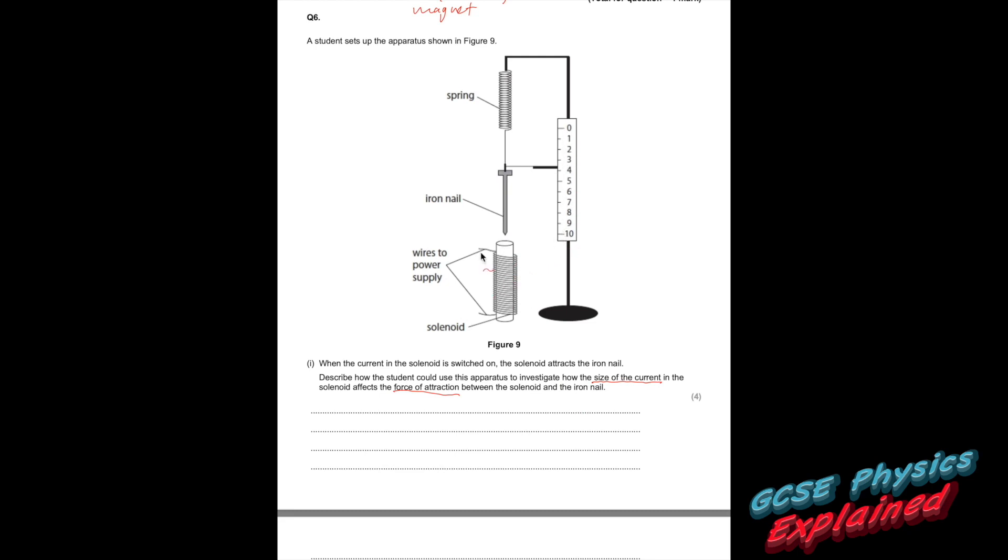So, if we have some way to measure how much current's going in, and we'll make it a small current at first, and that'll just pull the iron nail down a little bit, because a small current will create a small magnetic field. So, that'll be a small force of attraction, and that'll pull the spring down and the pointer down a little bit. And then, if we repeat it with a bigger current, and what we should see, hopefully, is the iron nail will get attracted with a bigger force. The iron nail will come further down, stretching the spring and pulling the pointer down further.